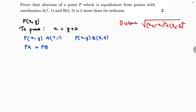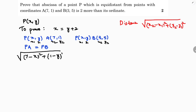Now substituting the values for PA: x1 is x, y1 is y, x2 is 7, y2 is 1. So PA equals under root of (7 minus x) whole square plus (1 minus y) whole square. For PB: x2 is 3, y2 is 5, so PB equals under root of (3 minus x) whole square plus (5 minus y) whole square.